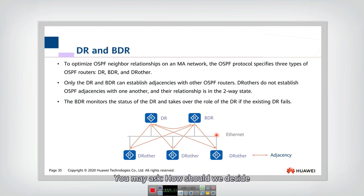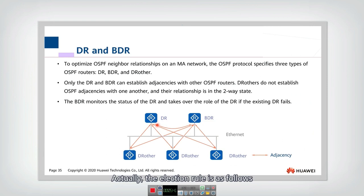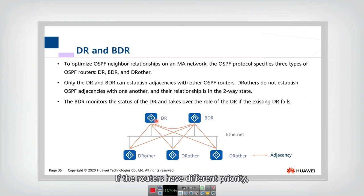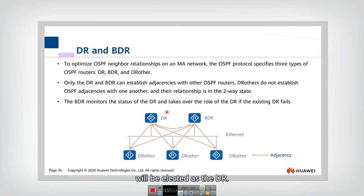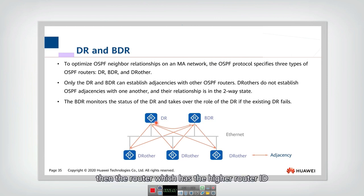You may ask: how do we decide which router is the DR and which is the backup DR? The election rule is as follows. If the routers have different priorities, the router with the higher priority will be elected as the designated router. If all routers have the same priority, then the router with the higher router ID will be elected as the designated router. Both the designated router and backup designated router are non-preemptive.